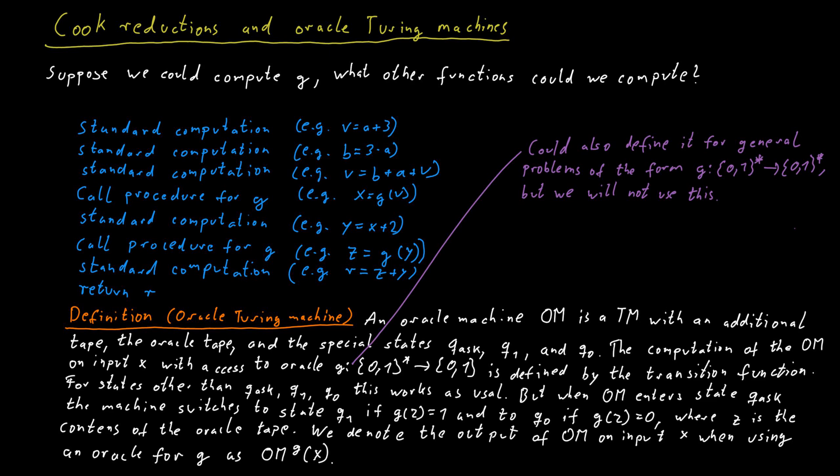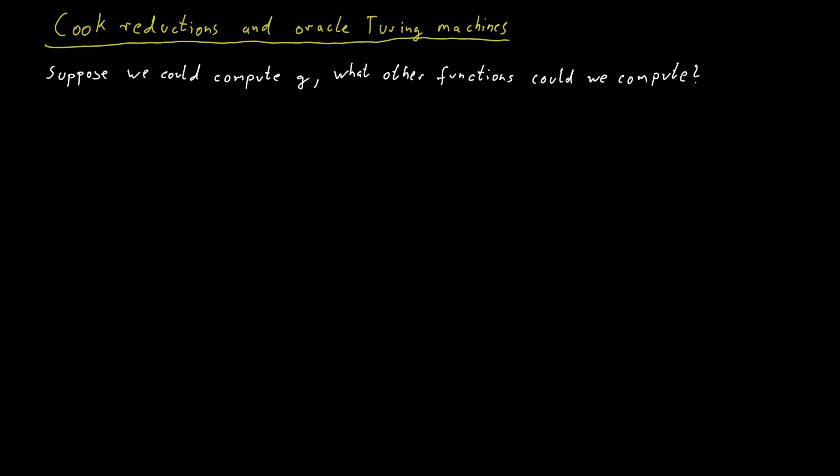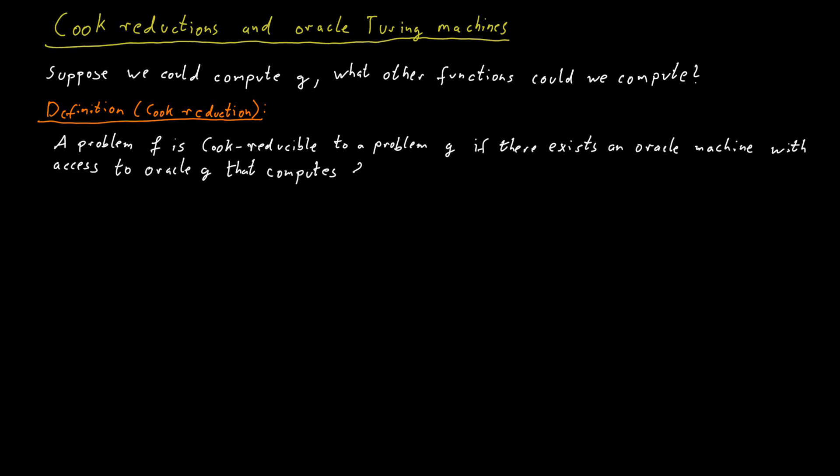These Oracle machines now give us an answer to our initial question. Which problems F can be computed if we can compute this function G? A problem F is cook reducible to a problem G if there exists an Oracle machine with access to Oracle G that computes F. When F is cook reducible to G, we write this as F is cook reducible to G.